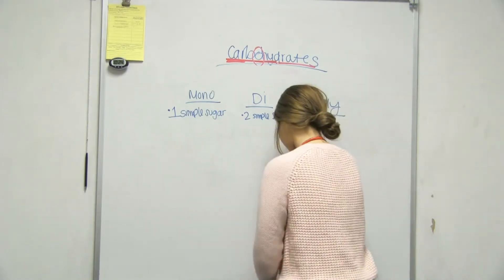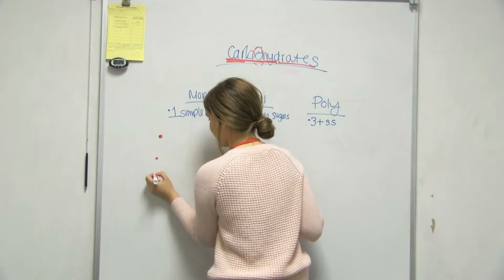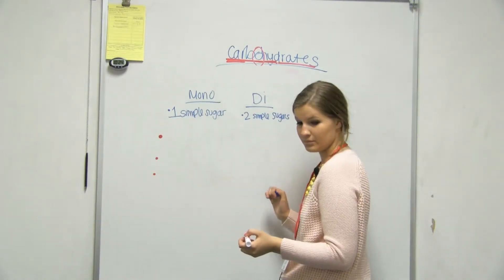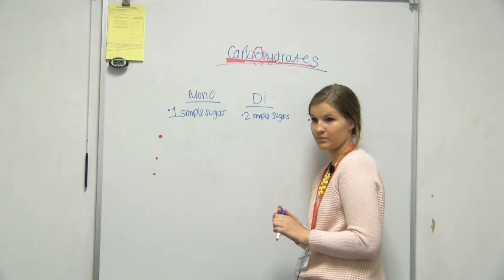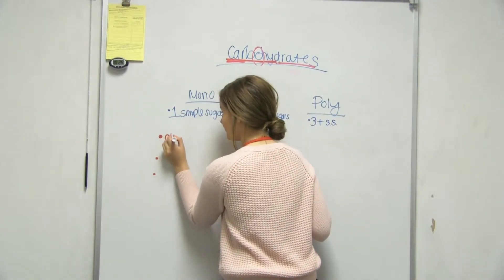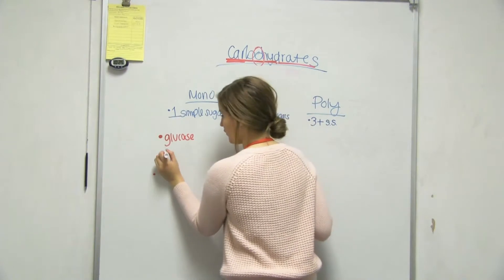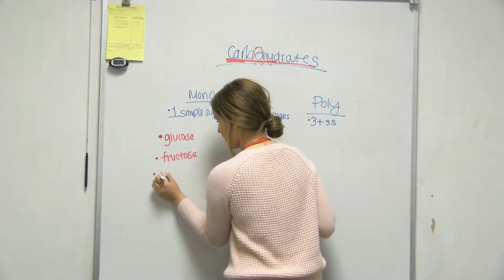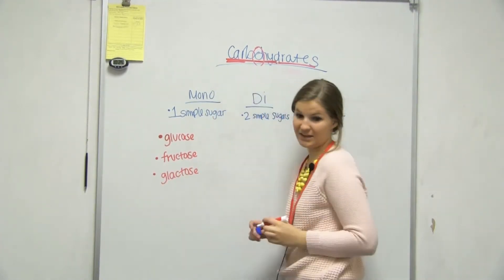And then poly would just be three or more simple sugars. Okay, and then we have three basic simple sugars that we need to worry about. Do you know what those are? I've written them. No, I don't. Okay, so it's going to be glucose is one. Okay. Fructose. Fructose. And galactose.